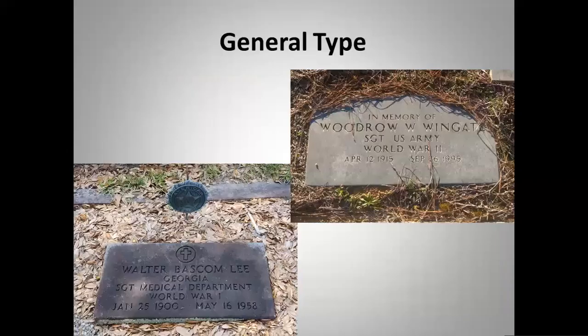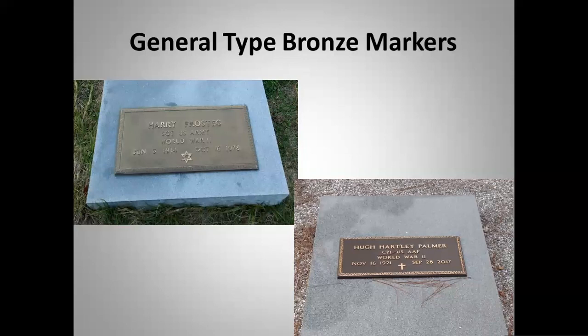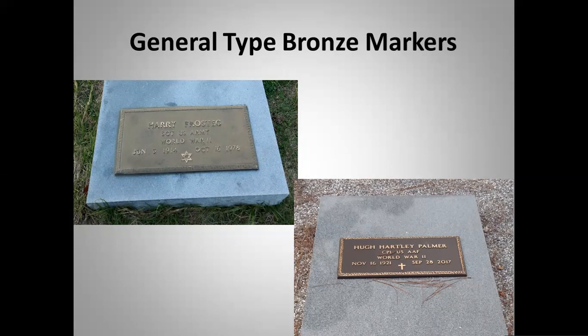General type military headstones: on the left there is a cross, the person's name, state, rank, which war, and dates. On the right it says 'in memory of,' meaning it was put there at a later date — it has the person's name, rank, and dates but does not list a state. Bronze general markers are typically installed on a stone. On the left is a Star of David for a World War II individual, and on the right a cross for World War II. The stone on the right was placed in 2017, so you can see the color difference — the older one is darker and just needs cleaning.